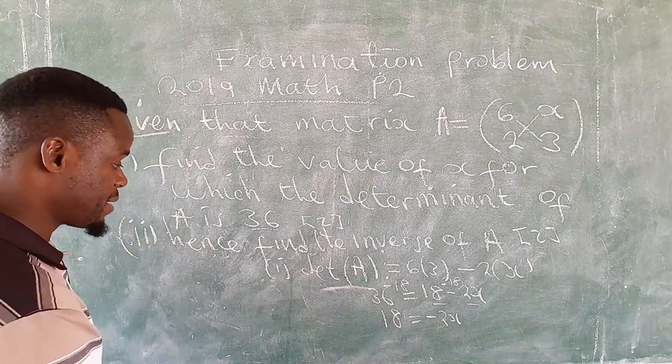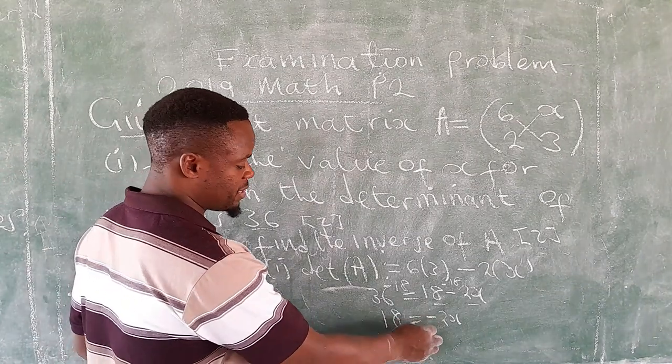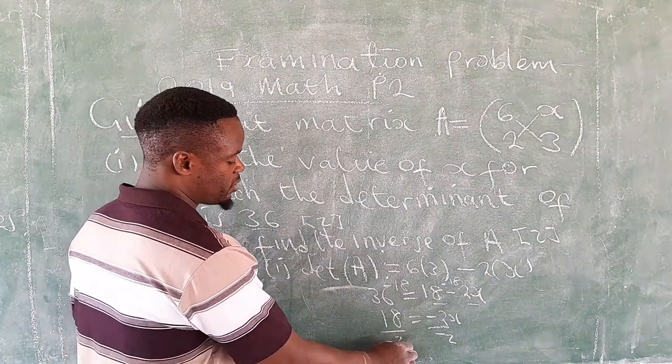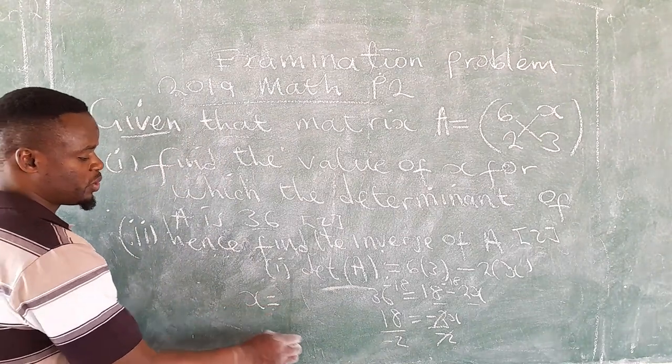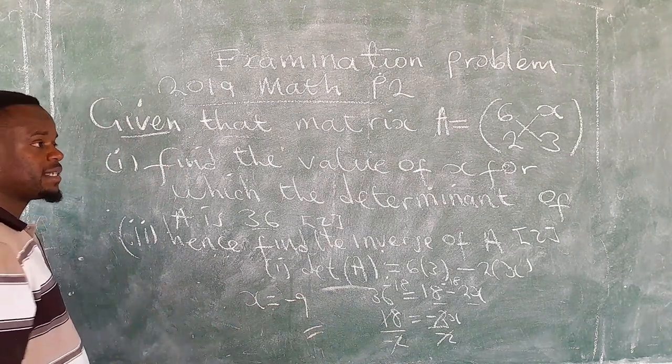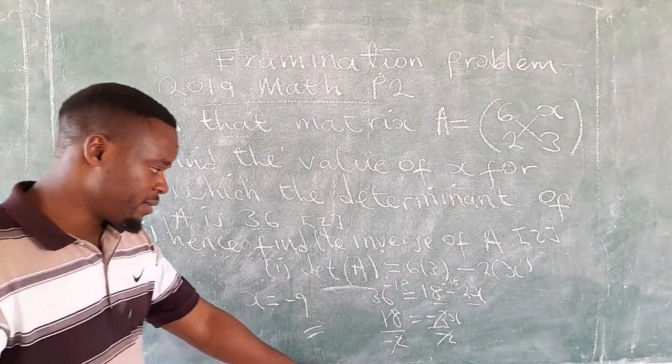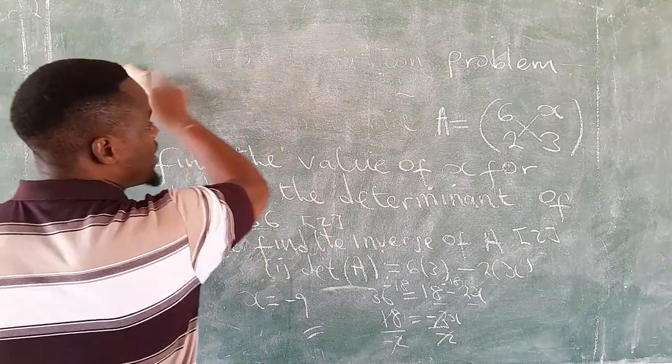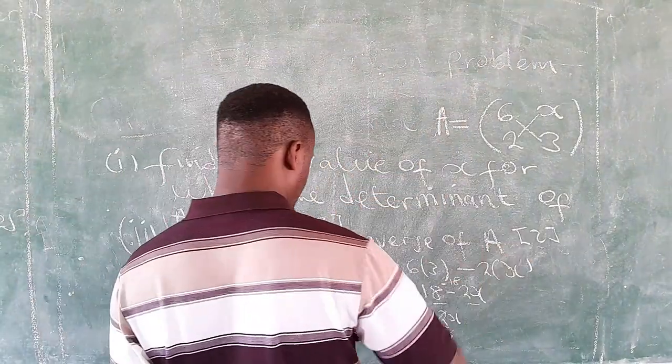With that, we can now determine the value. Divide by minus 2 on both sides, and therefore the value of x is equal to negative 9. After we determine the value of x, we can now write it there. Here we've actually found the value - it's actually negative 9. So matrix A is complete.